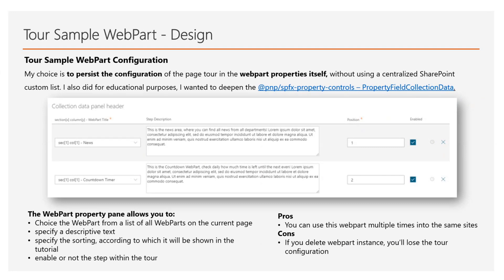The property pane allows you to choose the web part from a list of all web parts on the current page, specify a descriptive text like a step description, define the sorting order in which steps will be shown in the tutorial, and enable or disable a step in the tour. There are pros and cons to this choice. As a pro, you can use this web part multiple times on the same site across many pages. As a con, if you delete the web part instance, you lose the tour configuration.